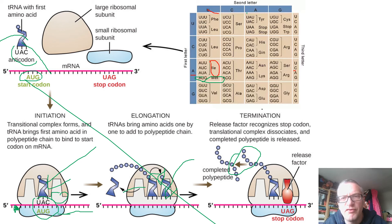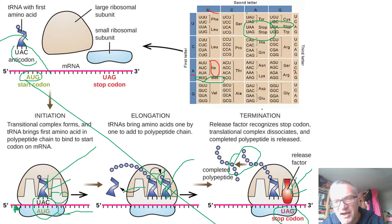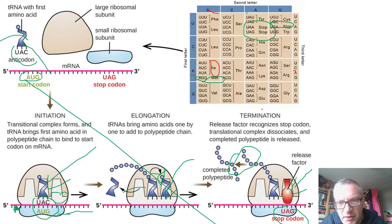We finished the elongation phase and moved on to termination, explaining what happens when there are three stop codons — UAA, UAG, and UGA — also called nonsense codons or chain-terminating codons. When one of these is read, instead of a transfer RNA filling the slot, a release factor binds. In the lecture, release factors were described as looking like Pac-Man ghosts. The polypeptide chain cannot be joined to anything and is released into the cell.